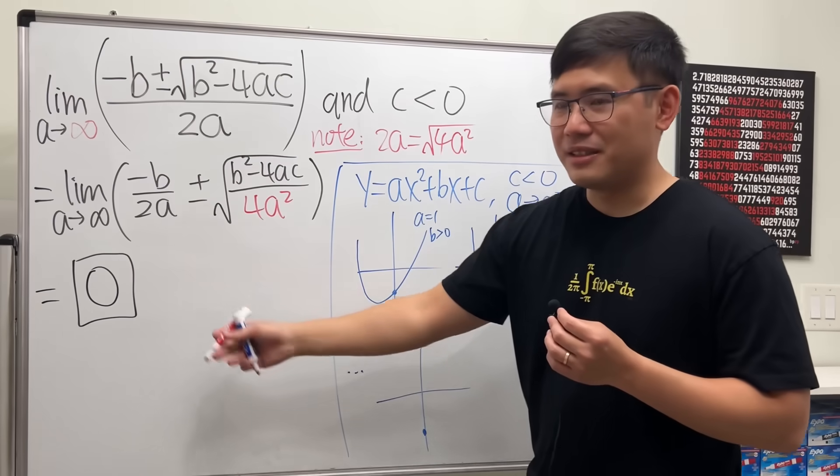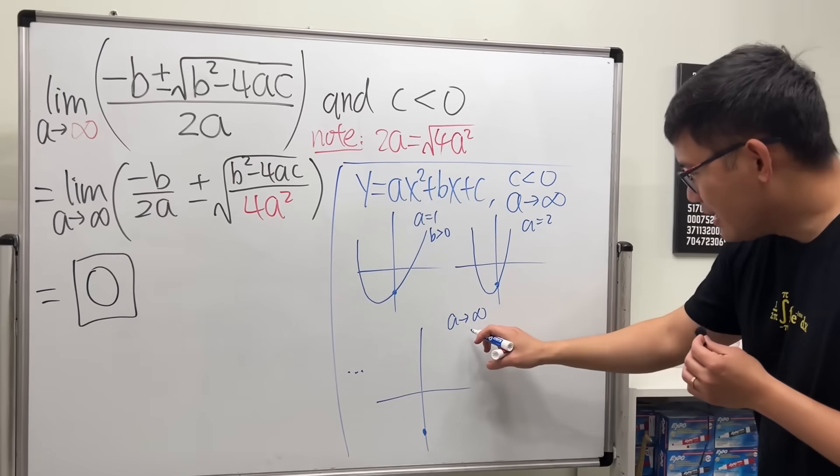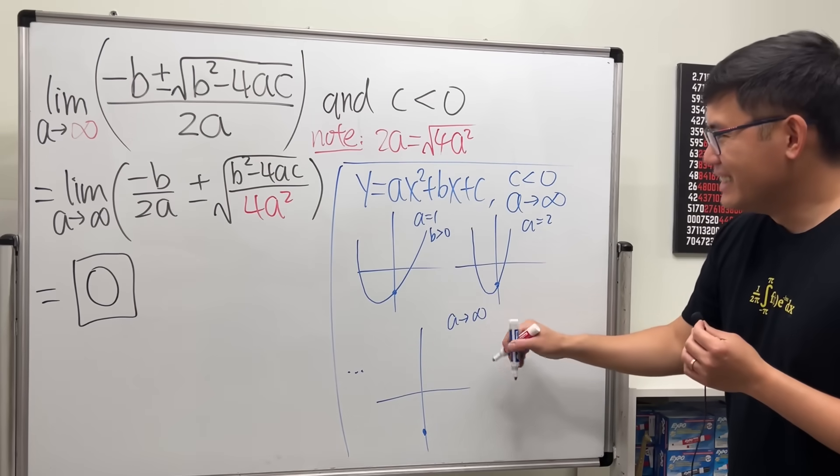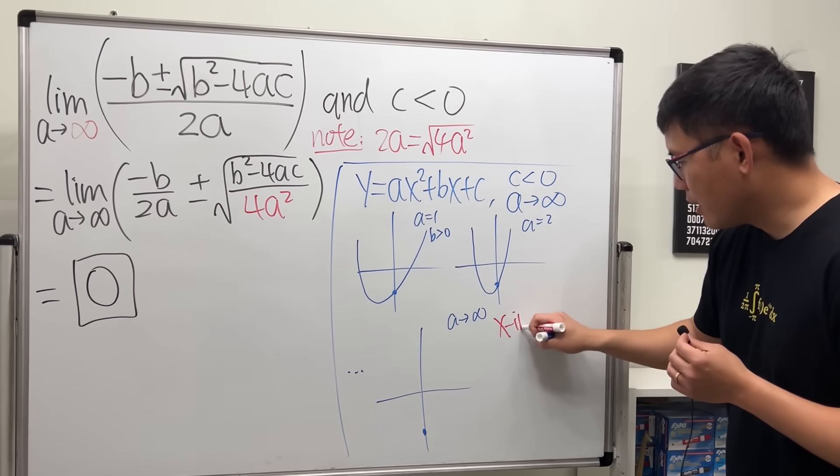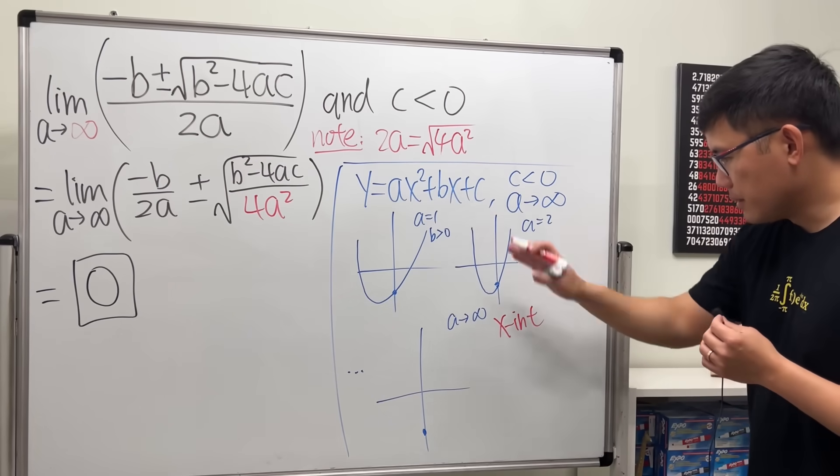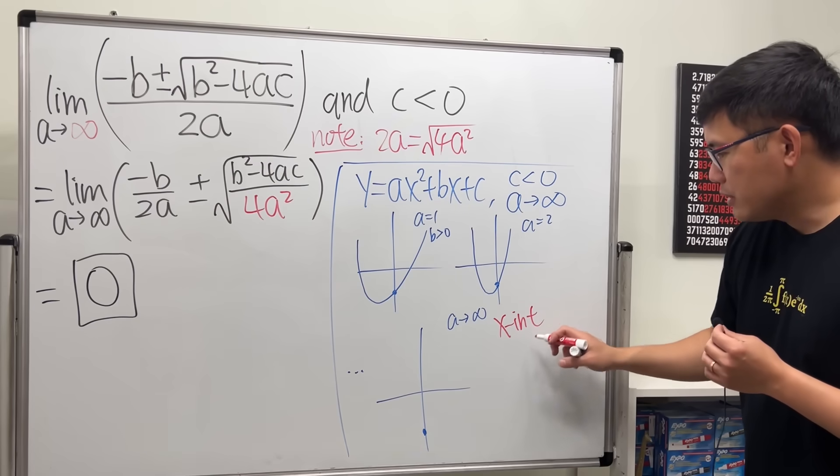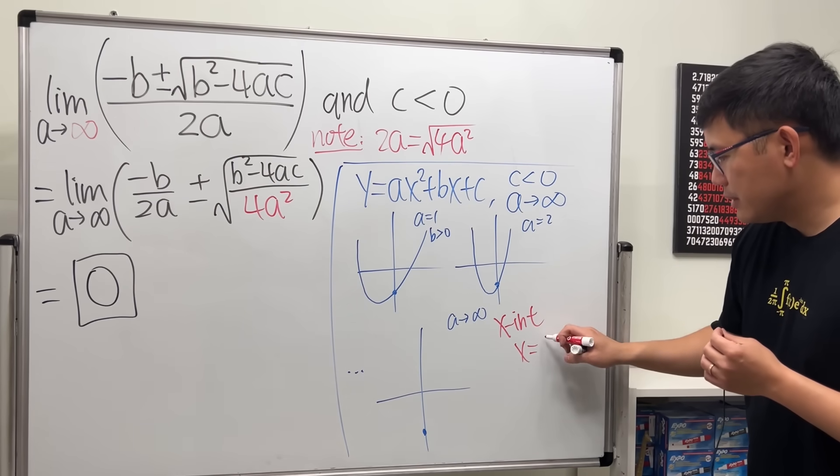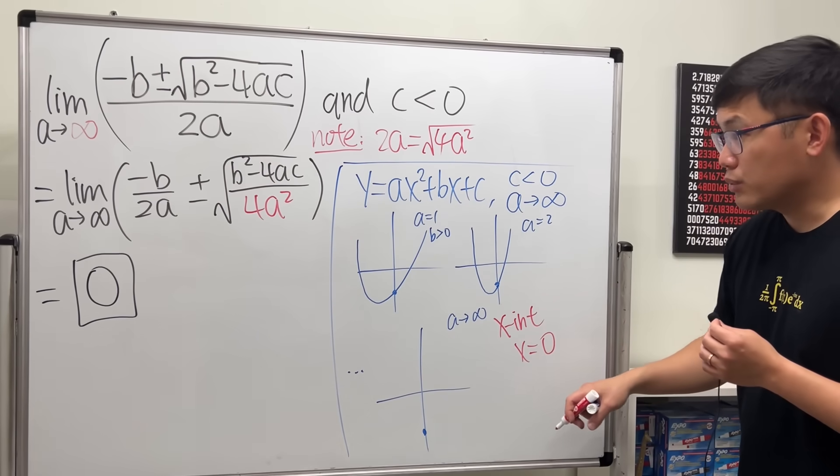Earlier our answer is zero, and remember this is the x-intercept. So as a approaching infinity, this means the x-intercept of the equation here, the parabola, will just be at x equal to zero as well. Wow.